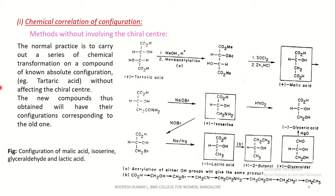For example, we have taken tartaric acid without affecting the chiral center. The new compounds obtained after many transformations will have their configurations corresponding to the old one. A few examples are shown in a figure illustrating the configuration of malic acid, isoserine, glyceraldehyde, and lactic acid.